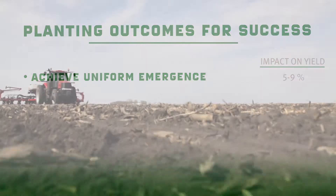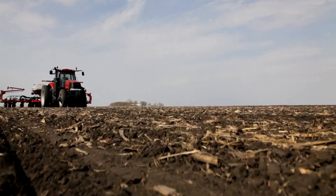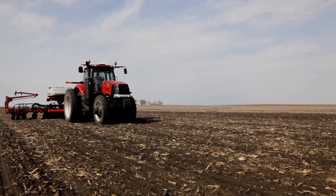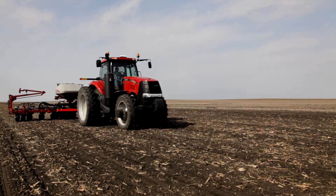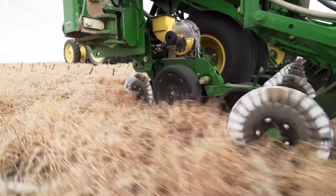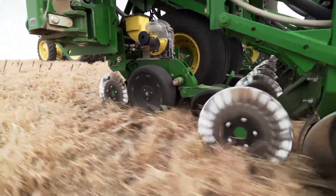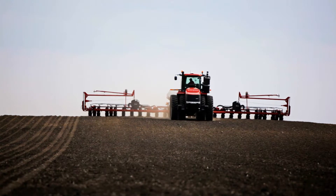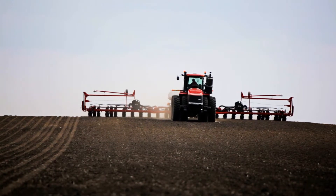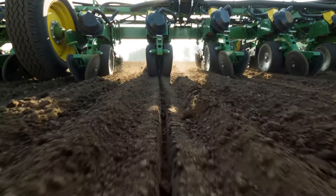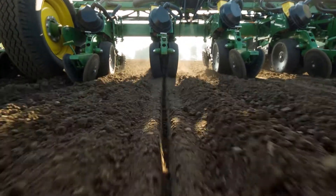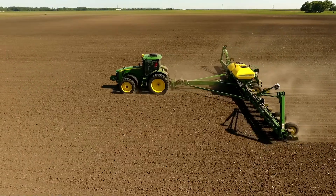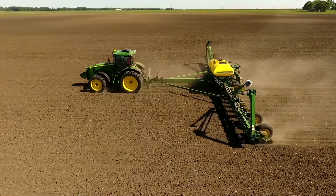There are several key factors there. One is to do everything we can with the planter to make sure we have a uniform planting depth. Second, to make sure that the seed furrow compaction is minimized. Third, to minimize surface crusting. Fourth, make sure the seed furrow is closed. And finally, to make sure that the residue is removed from the row area.